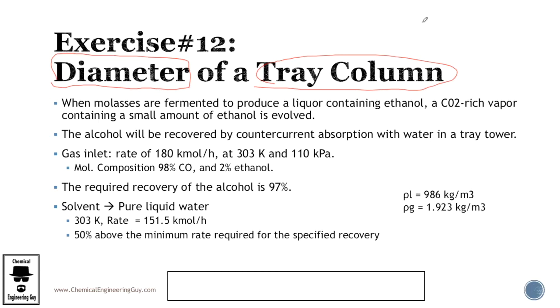So far we have seen how many stages, the efficiency, the material balances, the minimum solvent rate, and now it's time to see how to get the diameter of the column, a little bit more on the dimensions.